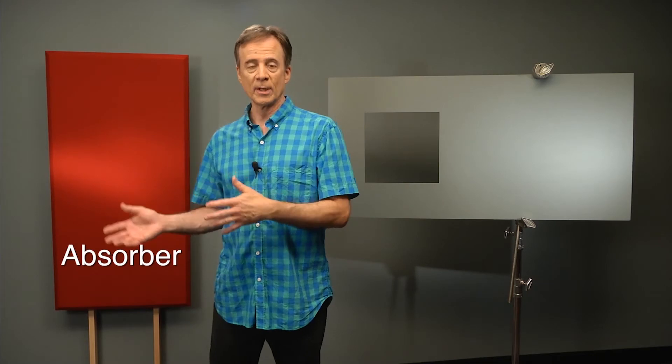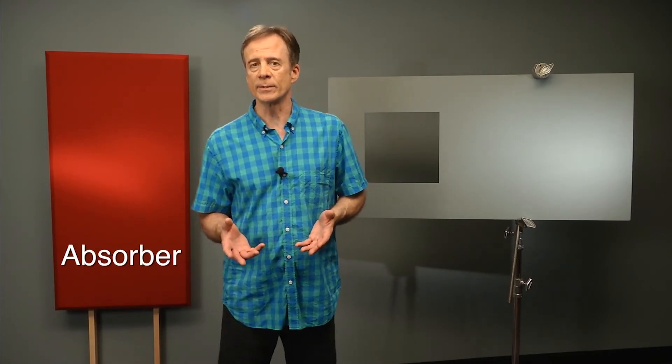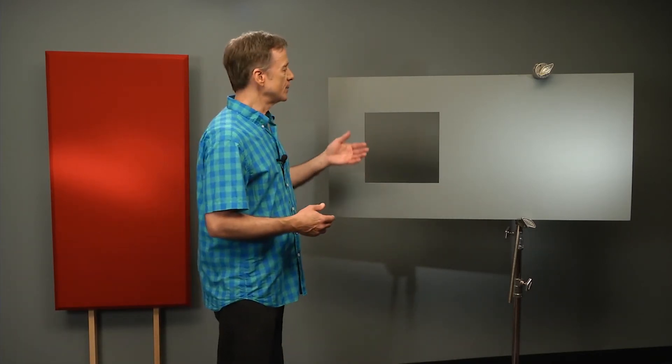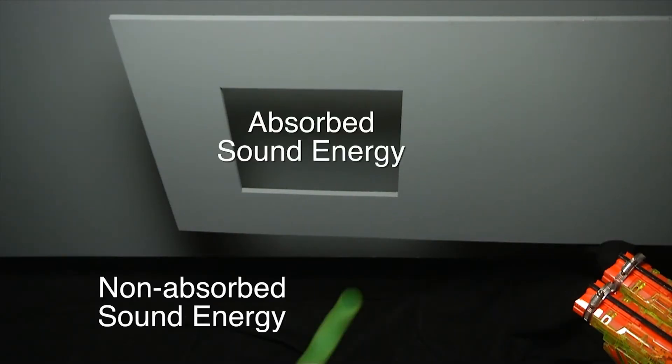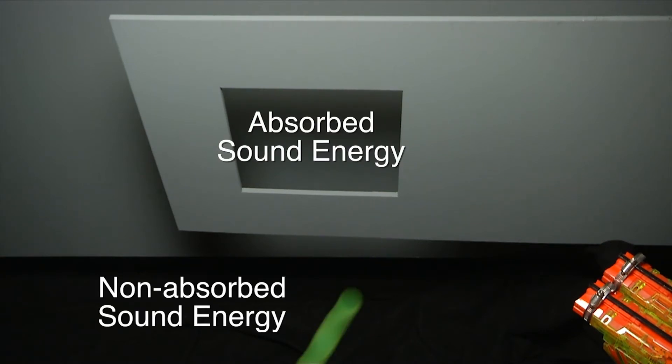Now let's use the first of our two acoustical tools, an absorber, to reduce the strength of sound bounces. To a sound wave, an absorber looks a little like a hole in the wall, so some of the energy doesn't come back. An absorber works by reducing the strength of reflected sound that would otherwise cause more destructive interference.